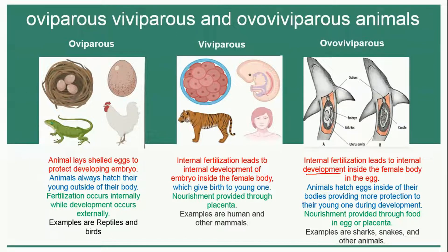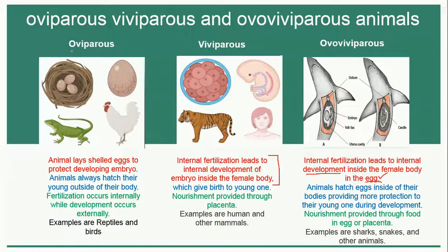However, the difference is that in ovo-viviparous animals, to provide more protection to the developing embryo, an egg is formed around the developing embryo, giving double protection. One protection is by the body of the mother and the second is by the egg. They have characteristics of both oviparous and viviparous animals, and they hatch the egg inside their bodies.